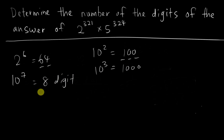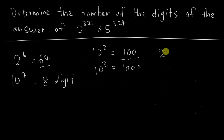So if we express things in terms of base 10, we can determine the number of digits simply by adding 1 to the power: 10 to the power of 7 gives 7+1=8 digits, and so on. In this question, luckily we have 2 and 5, and we know 2 multiplied by 5 gives 10.